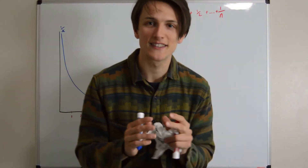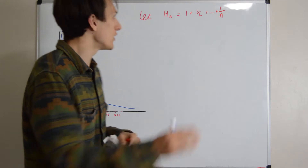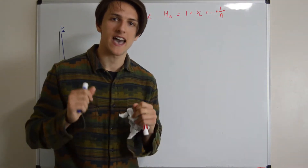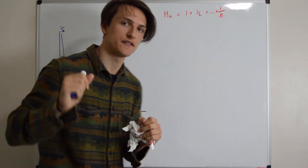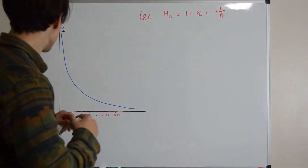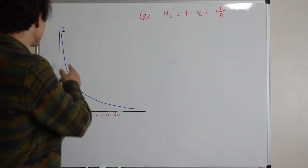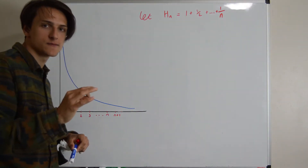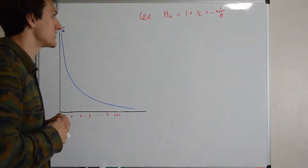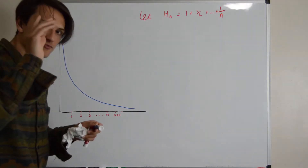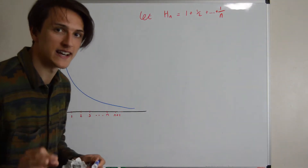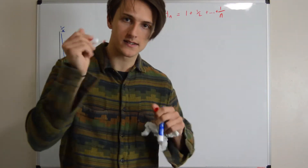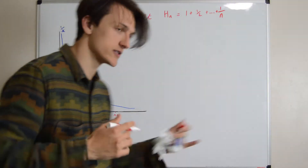So as we said, there's no closed form for the partial sums of the harmonic series, so our best effort is going to be in finding upper and lower bounds. Let's consider the graph of 1 over x, which is quite similar to the harmonic series, so let's compare the two. We can represent the partial sums of the harmonic series by bars and then just consider their areas.